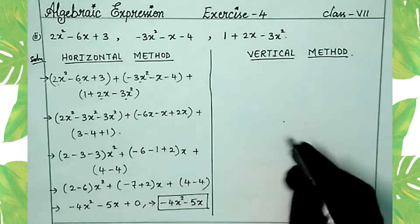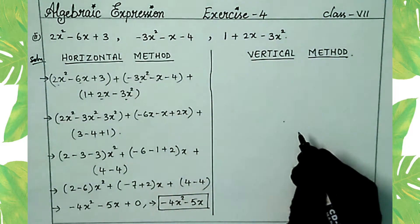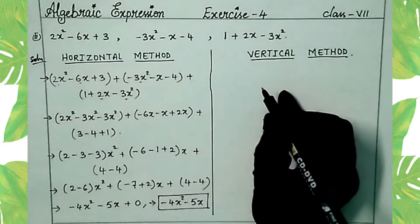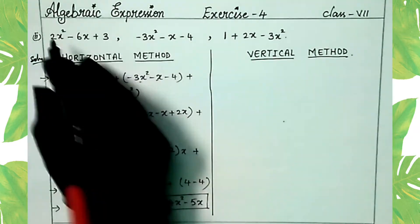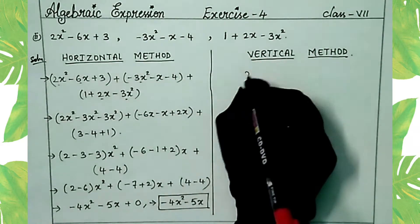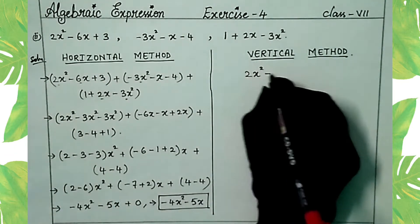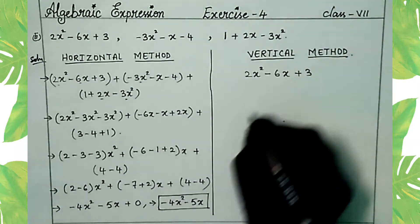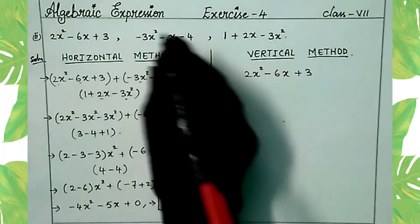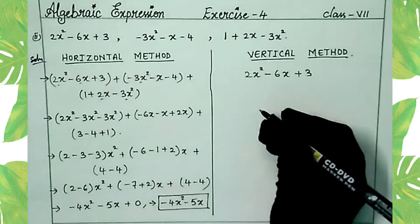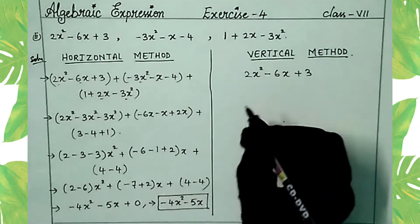So in this way we can add the three expressions by horizontal method. Let's move to the next method, that is the vertical method. First, we have to arrange the given expressions in standard form. The first one is already arranged: 2x² minus 6x plus 3.